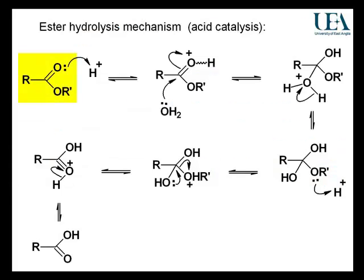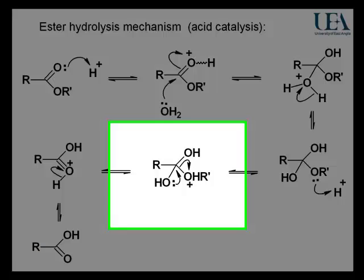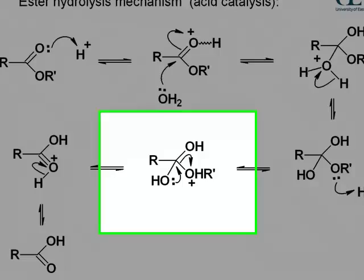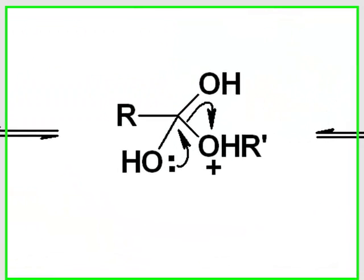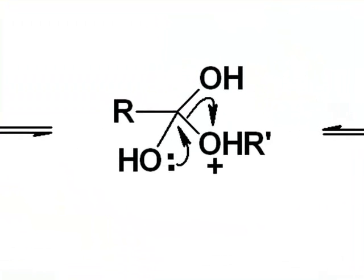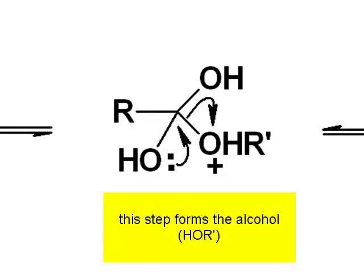Top left on this slide we have the ester starting material. Down the bottom on the left-hand side you can see the carboxylic acid. Alcohol is becoming detached from that ester during the hydrolysis process. Your eye should be drawn into the middle of the slide for the step where that alcohol is coming out — we have a protonated structure breaking out in the closing stages of the mechanism.